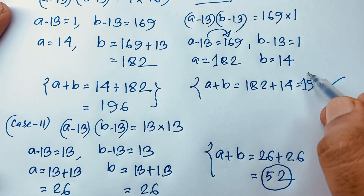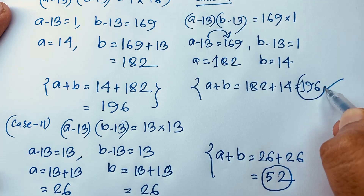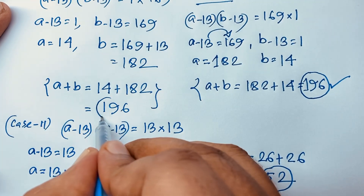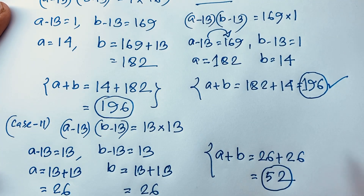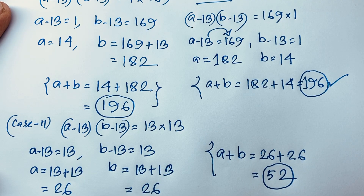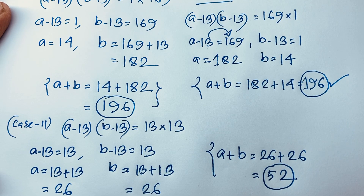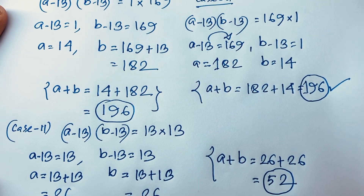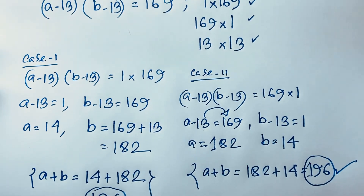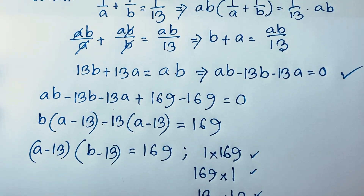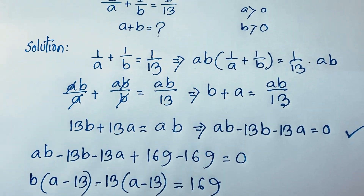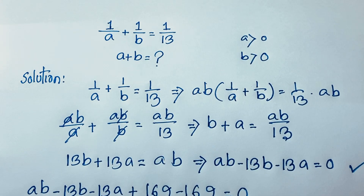So A plus B is equal to 196, or 196, or 52. This is our final solution to this maths Olympiad question. Thank you all. If you enjoyed this video, please subscribe to my channel for other interesting videos. Goodbye, take care.